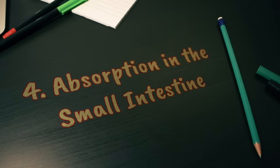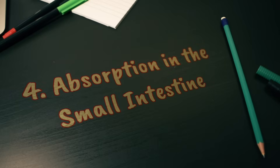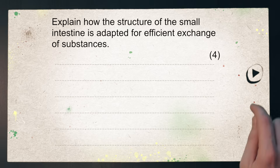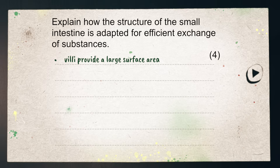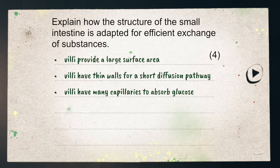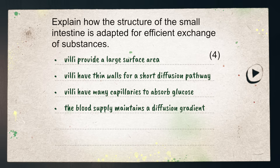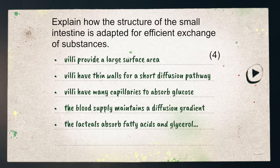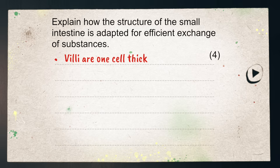Next up is absorption in the small intestine. 'Explain how the structure of the small intestine is adapted for efficient exchange of substances.' The villi provide a large surface area and they have thin walls for a short diffusion pathway. They also have many capillaries to absorb glucose. The blood supply maintains a diffusion gradient and the villi have lacteals to absorb fatty acids and glycerol. The lacteals are also long to give a large surface area. Just like the alveoli question, don't write 'their villi are one cell thick' — it's their walls that are one cell thick.